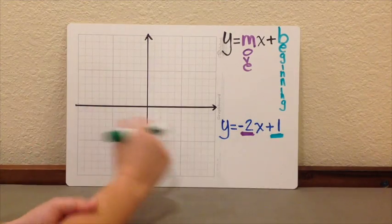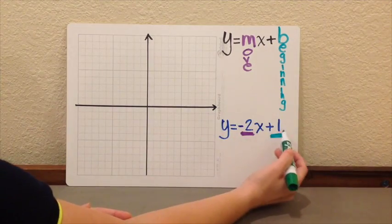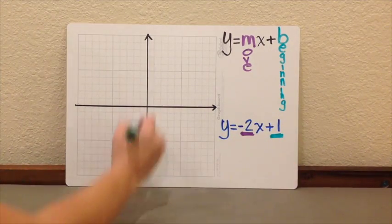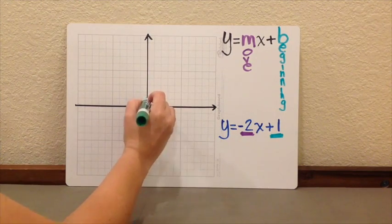So, if I want to graph this, I'm going to start, obviously, by the beginning, in this case, 1. So, our starting point will be 1. So, I start in the y-axis at 1. This is my starting point.